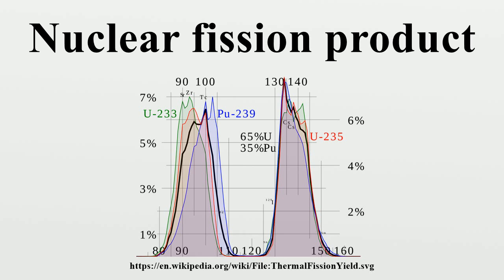Fission products emit beta radiation, while actinides primarily emit alpha radiation.